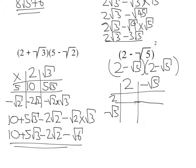2 times 2 is 4. We get minus 2 root 5 minus 2 root 5. And we get minus root 5 times minus root 5. That's just the same as saying root 25. So this here is 5.